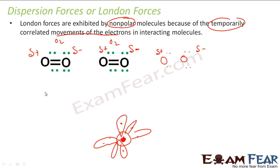The electrons jump around and temporarily the electron density is higher in one direction, giving that side a slight negative charge and the other a slight positive charge. This induces a similar charge distribution in the adjacent molecule. Consequently, we get a plus-minus-plus-minus-plus-minus alternating pattern between the molecules.